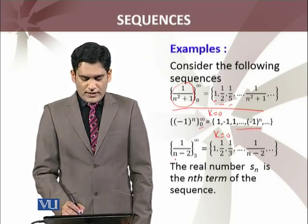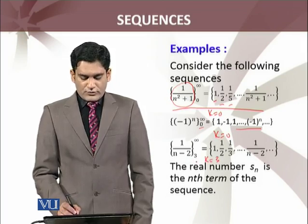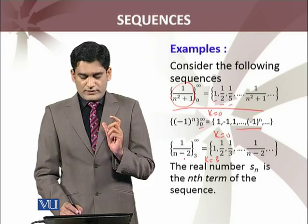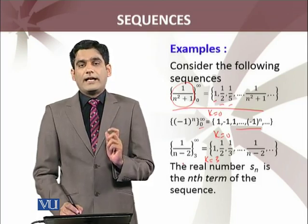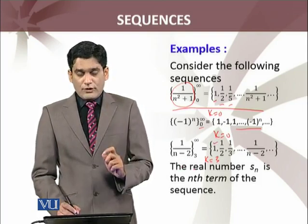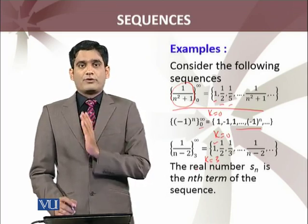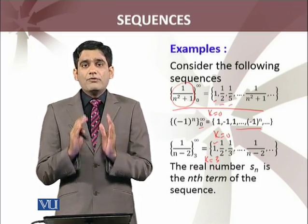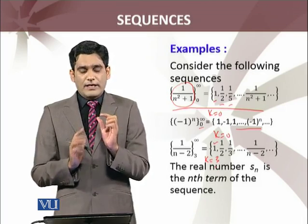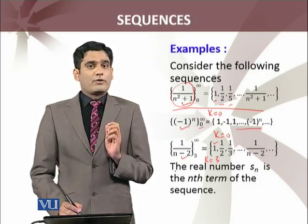The third example is 1 over (n minus 2), where k equals 3, so n starts from 3 to infinity. Starting from n equals 3, the first term of the sequence is 1. n equals 4 gives the second term, which is 1/2, and so on. So these are examples of sequences, and the expression s_n — which is 1 over (n minus 2) in this case — is the nth term of the sequence.